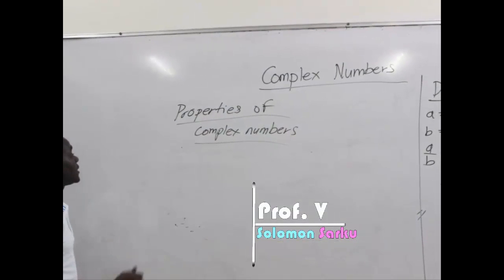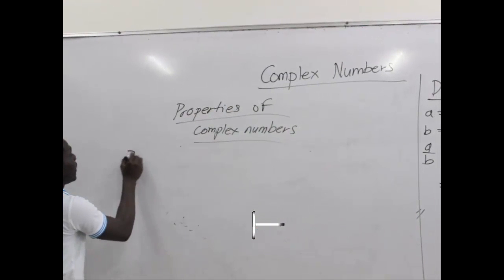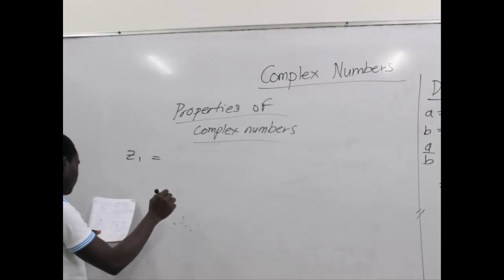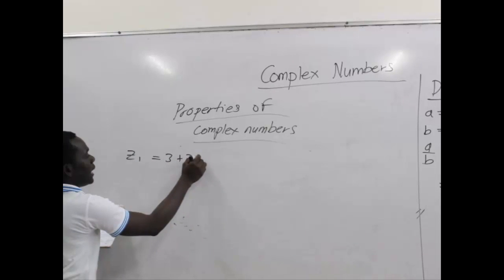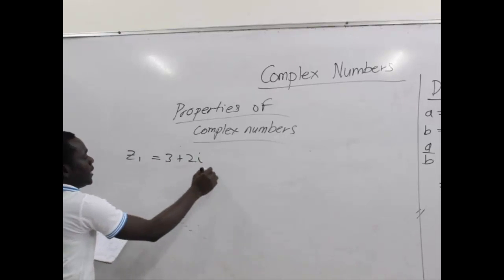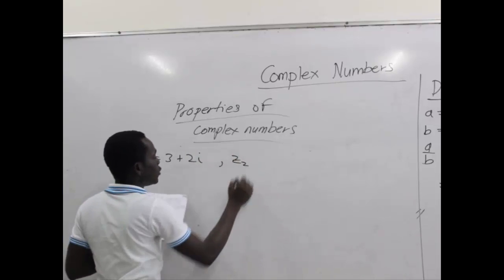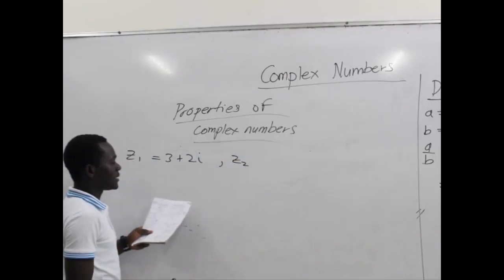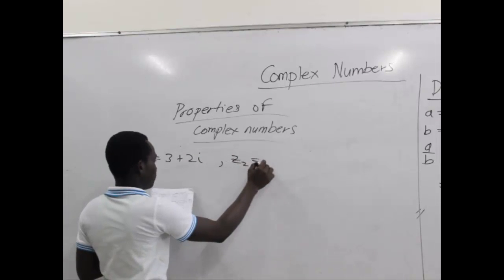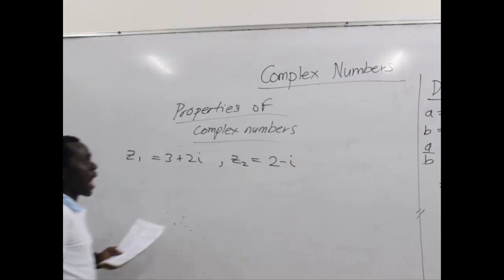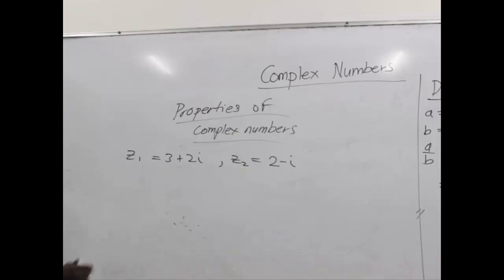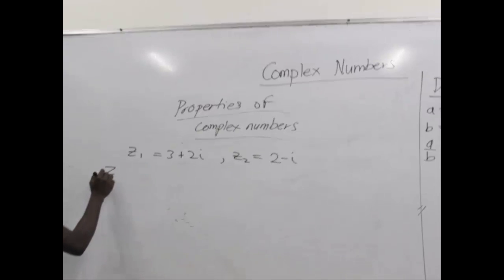Let's take z1 with component 3 plus 2i, and z2, another complex number with the component 2 minus i. We want to define their division.